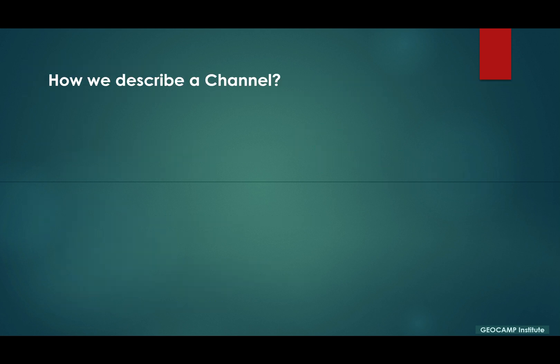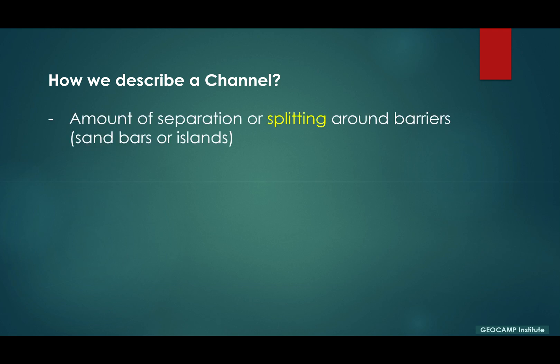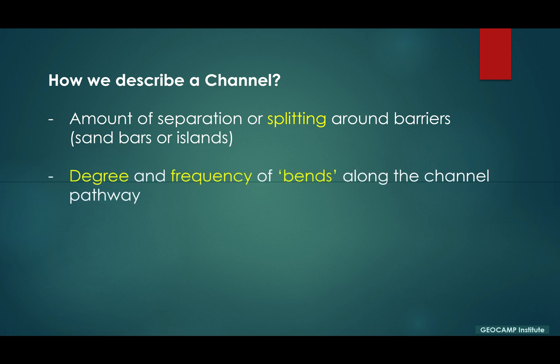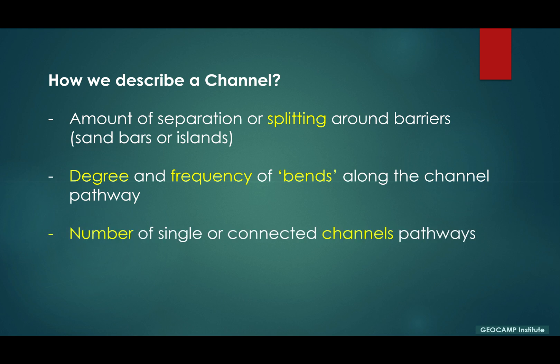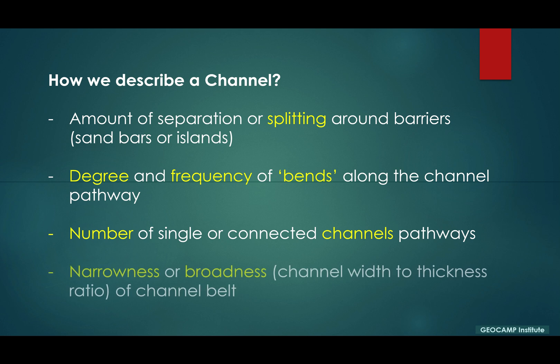There are about four elements considered in describing a channel. First, the amount of separation or splitting around barriers in the form of sandbars or islands. Second, the degree and frequency of bends or twists along the channel pathway. Third, the number of single or connected channel pathways. And fourth, the extent of narrowness or broadness of the channel bed, which speaks to the width-to-depth ratio.